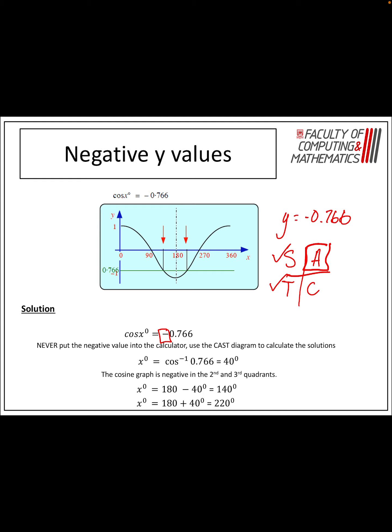Using the CAST diagram, cos is negative in the second quadrant and the third quadrant. To get an answer in the second quadrant, I do 180 minus that 40, and then 180 plus to get into the third quadrant. That 40 degrees is not an answer I'm looking for, but I need it to find the other two answers. My two answers for this solution are 140 degrees and 220 degrees.